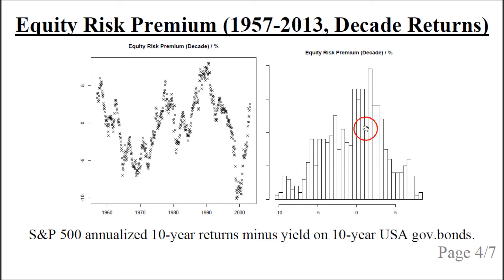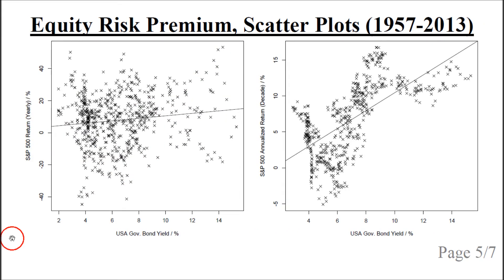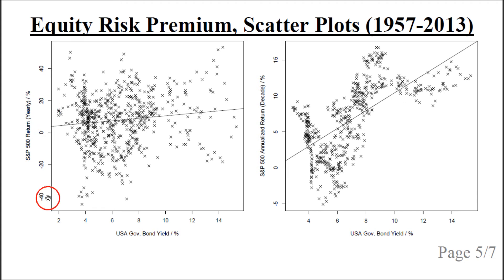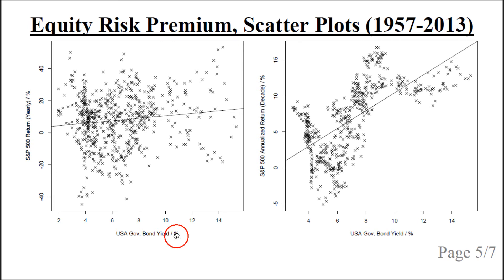The histogram of the distribution confirms there is no constant equity risk premium — it varies widely and seemingly unpredictably. Looking at the scatterplots: the left scatterplot shows single-year returns for the S&P 500. The US government bond yield on the horizontal axis goes from 2% to over 14%, while the S&P 500 single-year return ranges from minus 40% to plus 40%. A linear fit is not a good fit — there is no obvious relationship between these two yields. It is really quite random.